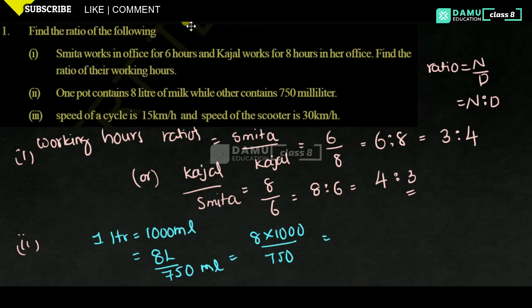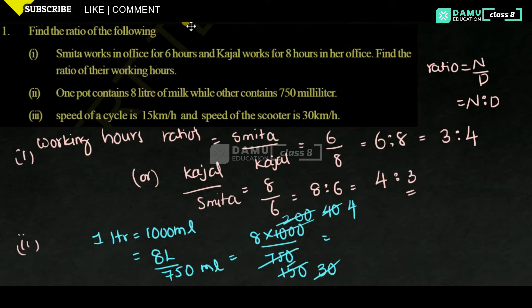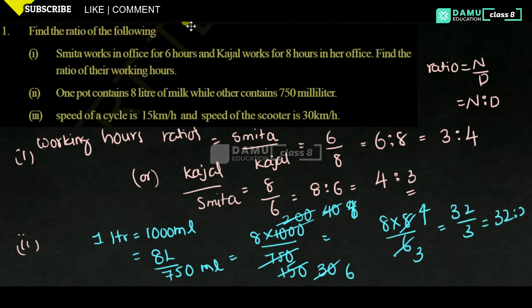So we need to find the ratio 8000 to 750. Simplifying by dividing both by 250, we get 32 by 3 — that is the ratio 32 is to 3.